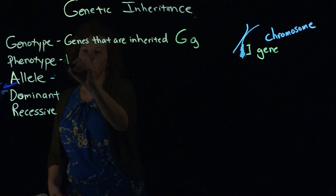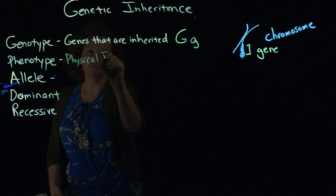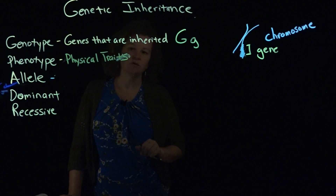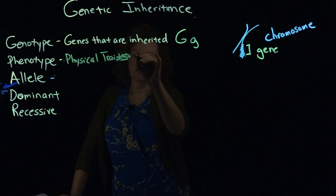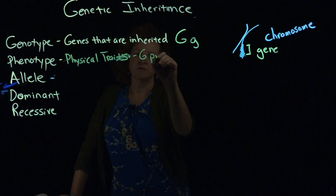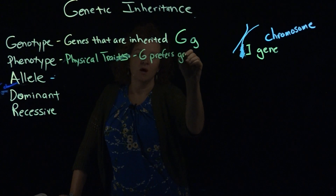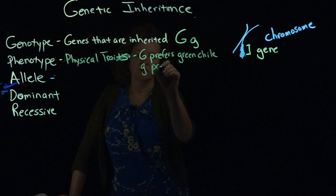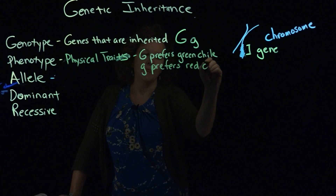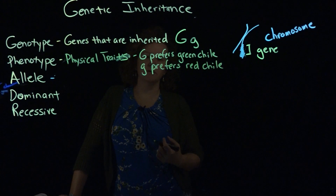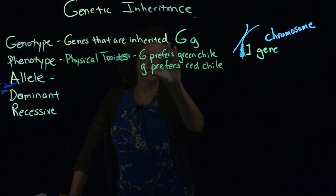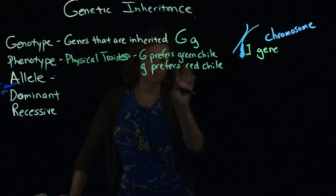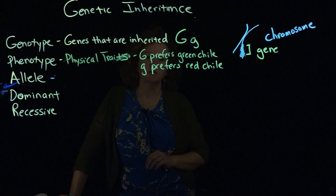The phenotype refers to the physical traits. When tracking these problems, we need to align each letter with an actual trait. For example, we could say capital G means 'prefers green chili' — I'm living in New Mexico, so that's a very big deal here — and lowercase g means 'prefers red chili.' This is an artificial system, of course. Most inheritance patterns are very complex, but we start with this beginning overview to see how traits are passed through generations, keeping in mind other genes can control expression.